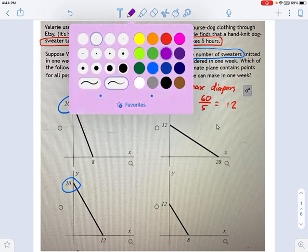And I'm going to say purple is x. That's the number of diapers. Okay, and that can be up to 12. So what do we got here? Looks like this is the only one that works for the diapers graph.